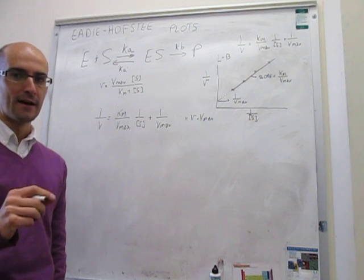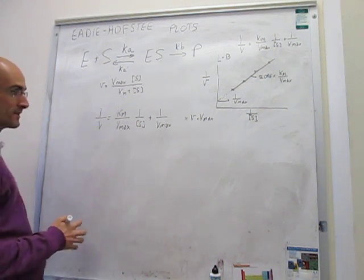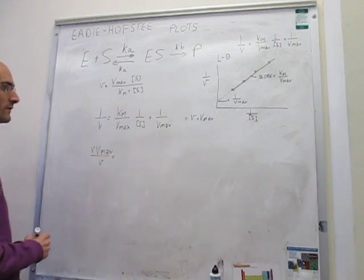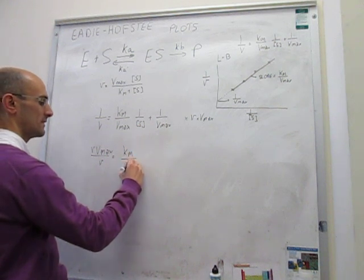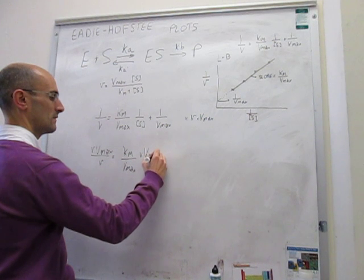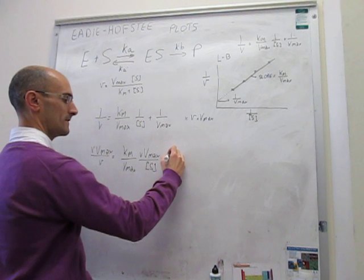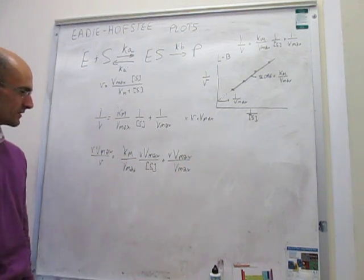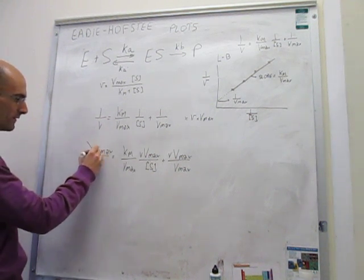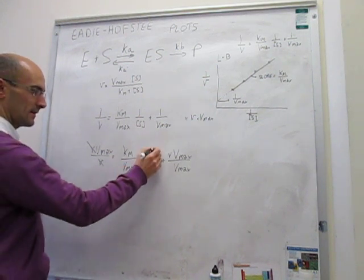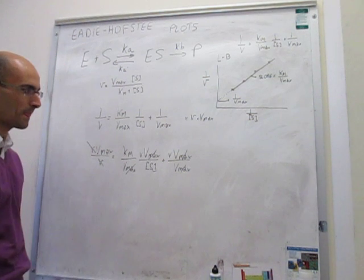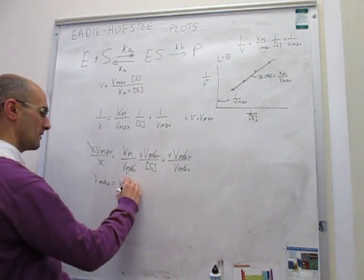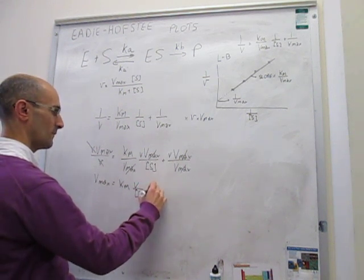Assuming you've worked through this on your own: when you multiply everything by V times Vmax, the left-hand side gives V times Vmax over V, and the right-hand side gives (Km/Vmax)(V·Vmax/[S]) plus V times Vmax over Vmax. There is a good deal of cancellation throughout: on the left-hand side V remains and Vmax cancels, and on the right-hand side Vmax cancels in both terms. The expression simplifies to: Vmax = Km·V/[S] + V.